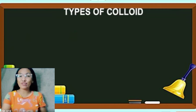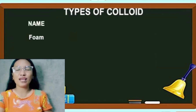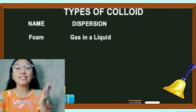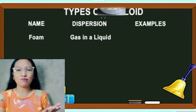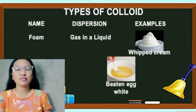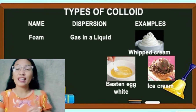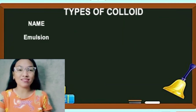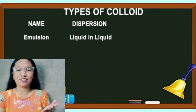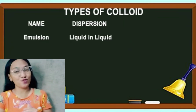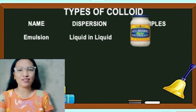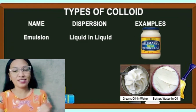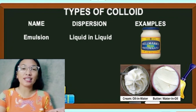Let's move on to the different types of colloids. First, we have foam. The dispersion of this mixture is gas in a liquid. For example, we have whipped cream, beaten egg white, and ice cream. Another type is emulsion. The dispersion of this mixture is liquid in another liquid. For example, we have mayonnaise, cream which is oil in water, and butter.